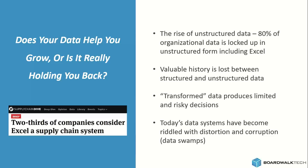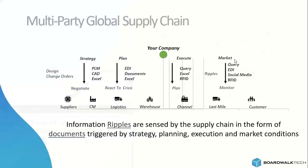Today's systems have become riddled with distortion. If you think about this multi-party global supply chain, we have this notion of an information ripple. As something happens — whether it's an email, an Excel file, a document, an EDI, or a post somewhere — a ripple is created by the supply chain in the form of documents triggered by strategy, planning, execution, and marketing conditions. An inventory report, for example, is a document because the result is a set of rows and columns showing your current inventory position.